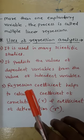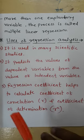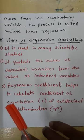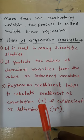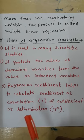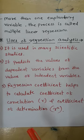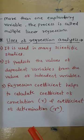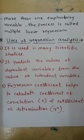The uses of regression analysis: it is used in many scientific studies. It predicts the values of dependent variables from the values of independent variables. Regression coefficients help to calculate the coefficient of correlation (r) and the coefficient of determination (r-squared). These values can be derived and proved using regression analysis formulas.